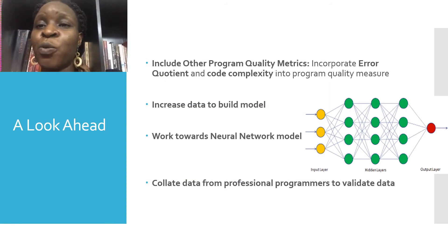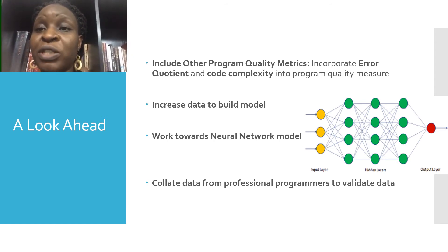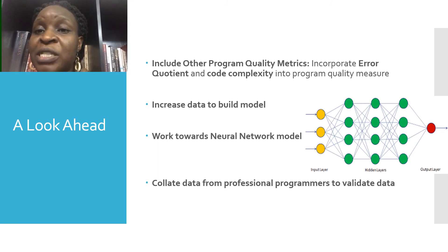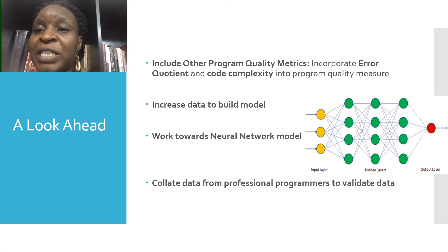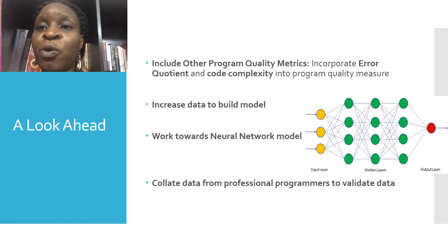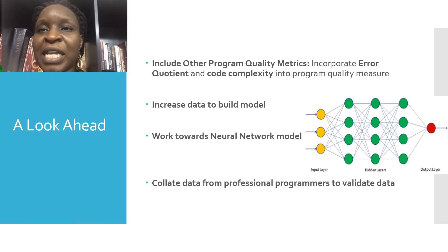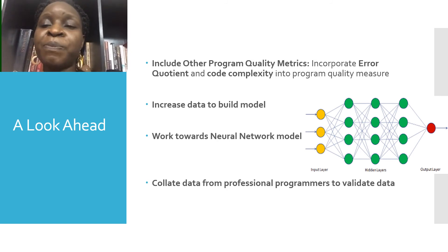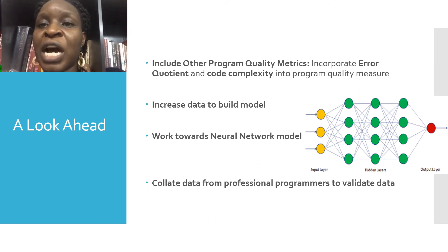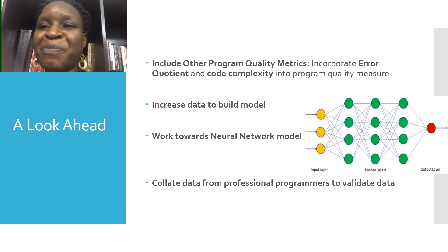Looking ahead, we're looking to collect more data using students to get more data points and see how that strengthens the model. We're also looking at getting data from professionals to validate the model. Additionally, we're exploring not just a linear model but the possibility of developing a neural network, as we are looking at the end of this work to have a kind of predictive model that can learn over time and predict the skill of certain individuals when their characteristics have been fed into the model.